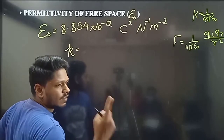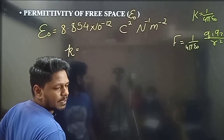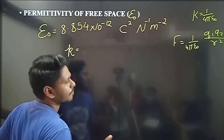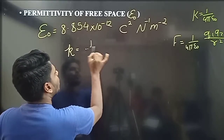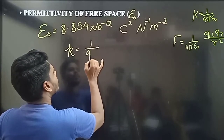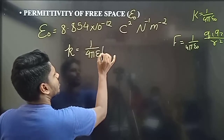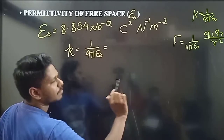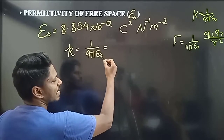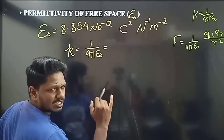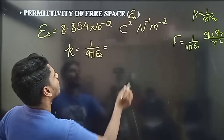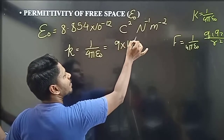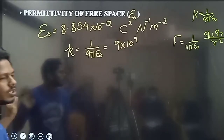In the day one video, if you look at the comment section and check the heart post — K value is 1 by 4 pi epsilon naught. If you substitute all the values — 1 by 4 (constant), pi (constant), epsilon naught (constant) — the value comes out to 9 × 10 power 9.